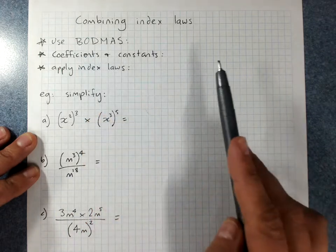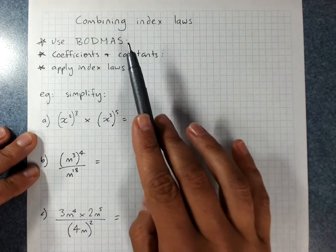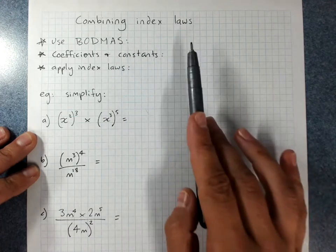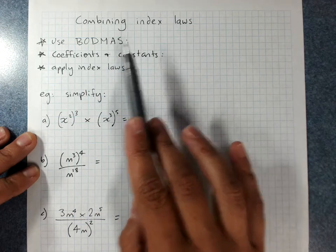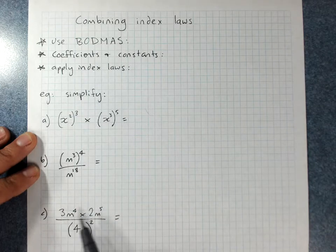Deal with any brackets first, any powers that you can evaluate, then multiplying and dividing using the index laws, unlikely to be adding and subtracting. Coefficients and constants, that is the big numbers, the whole numbers.